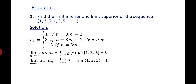Let's solve a few problems. Find the limit inferior and limit superior of the sequence 1, 3, 5, 1, 3, 5, and so on. This a_n can be written in three different terms: the value becomes 1 if n = 3m - 2, it becomes 3 if n = 3m - 1, and it becomes 5 if n = 3m.